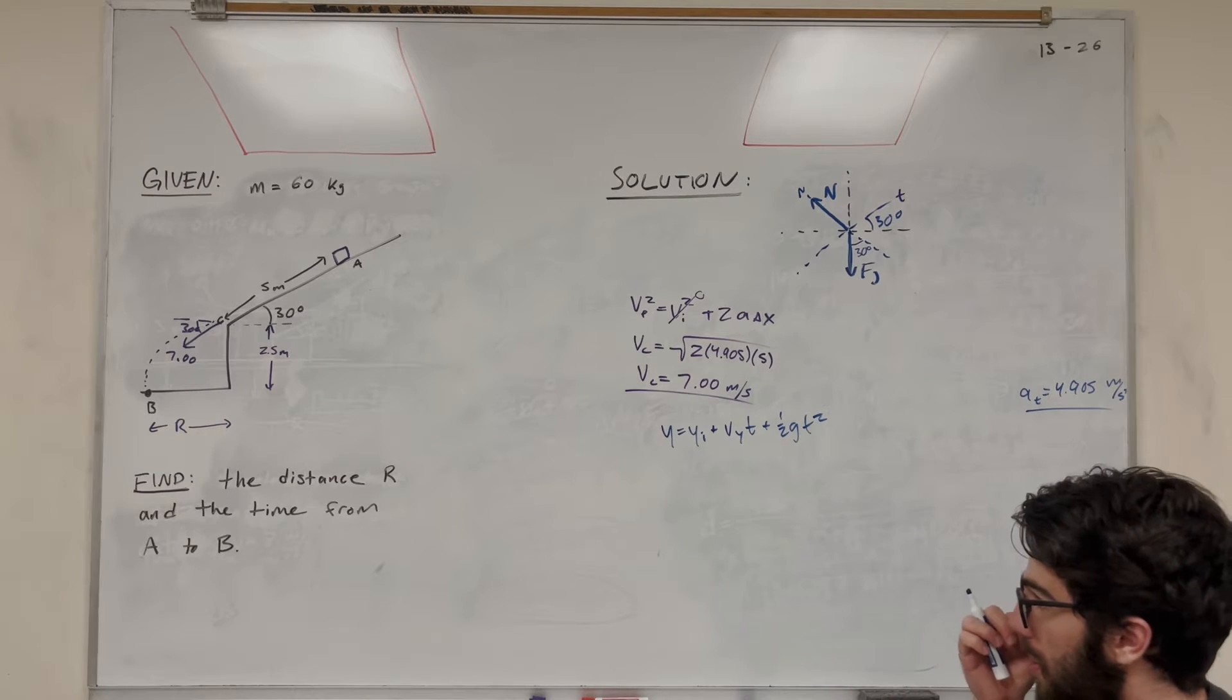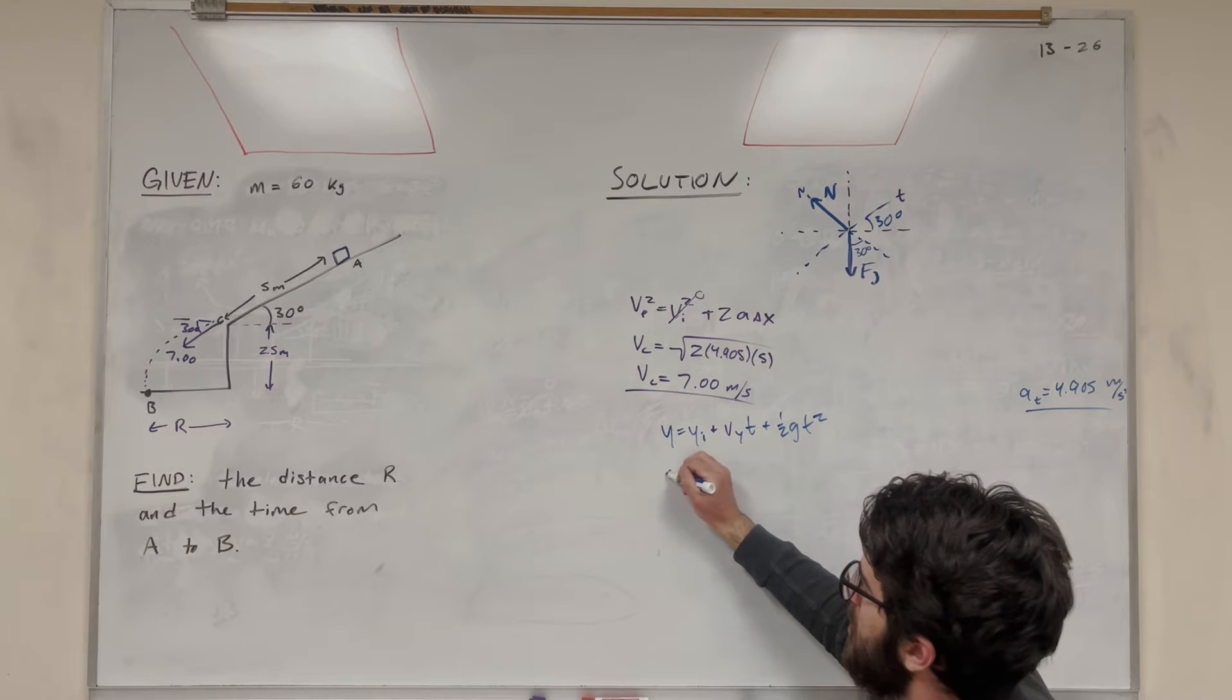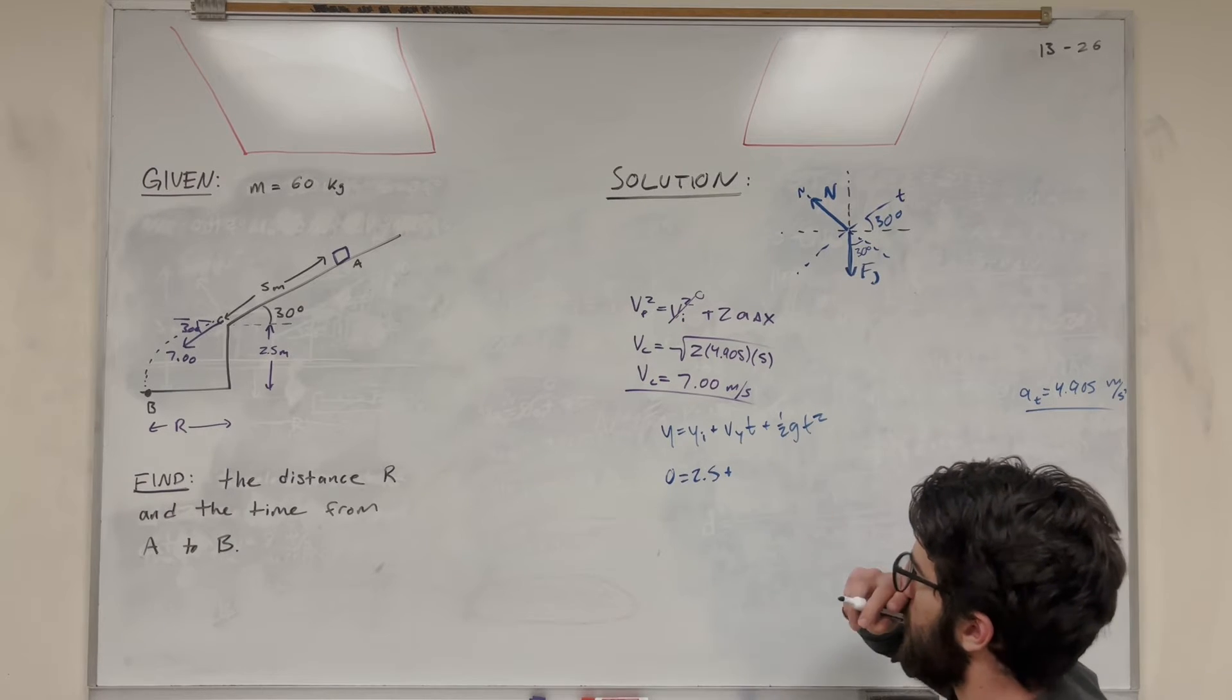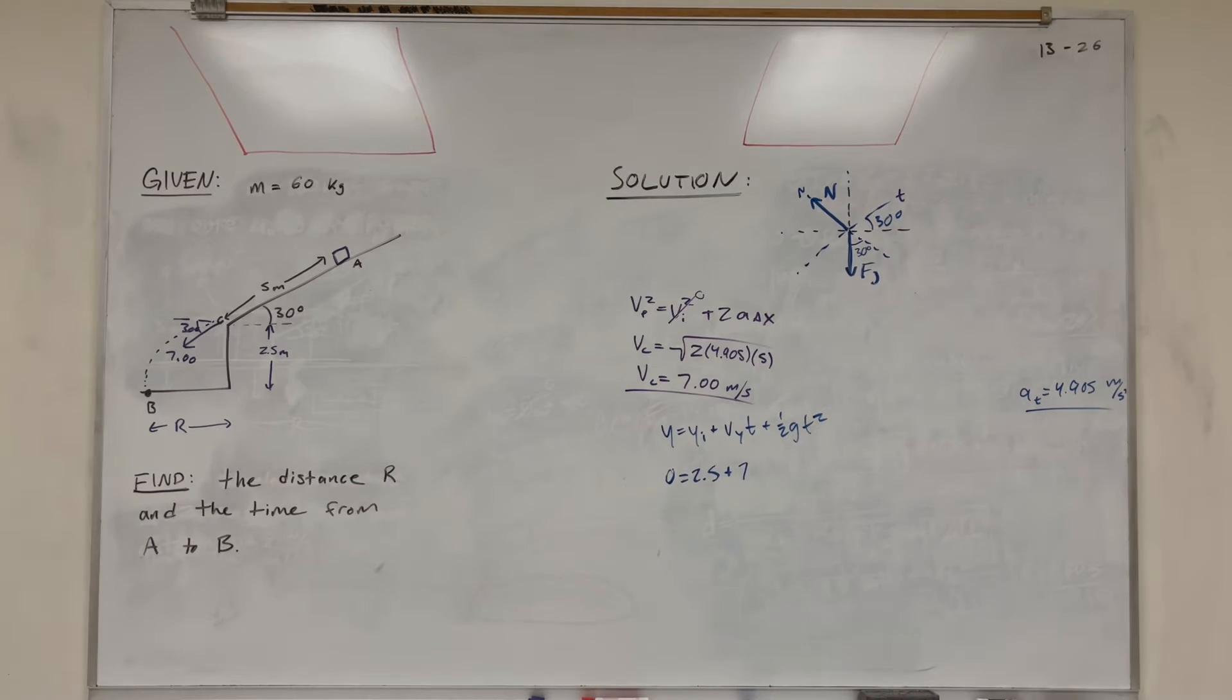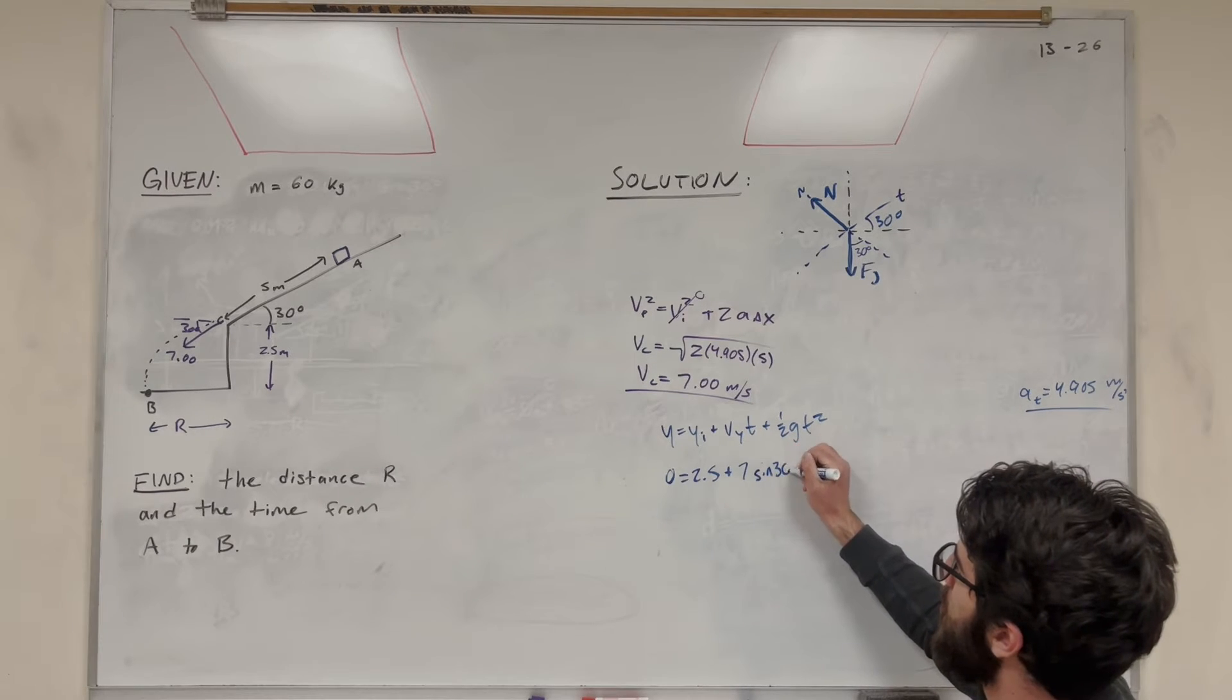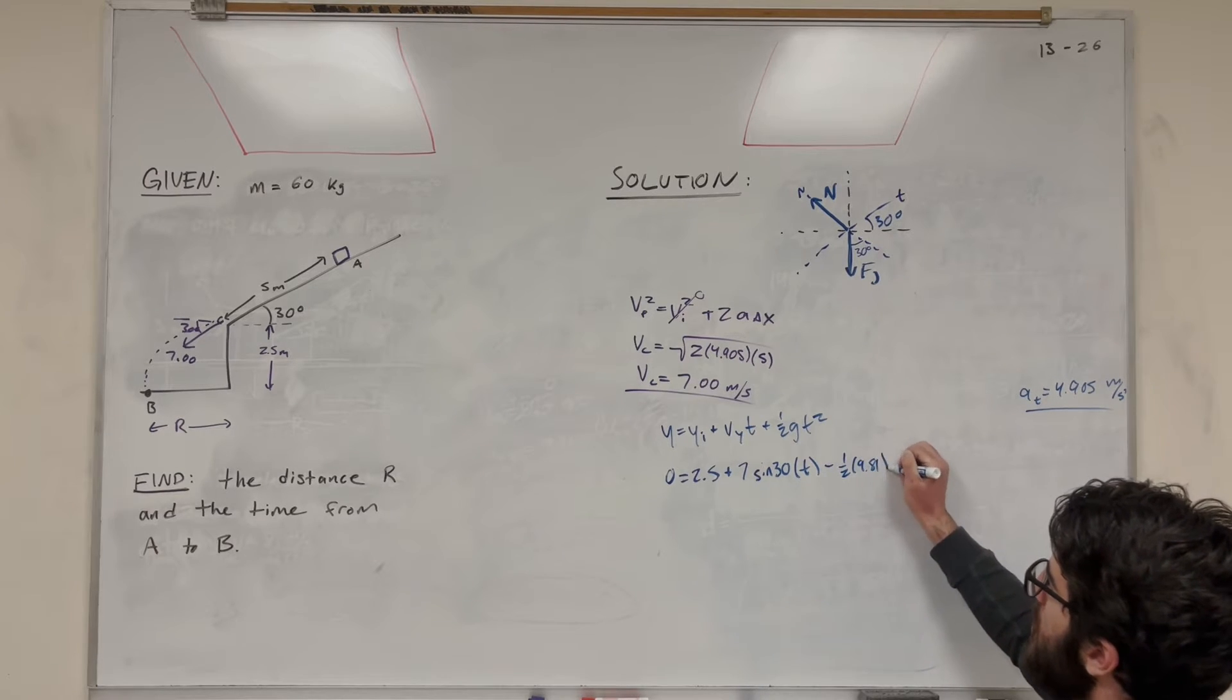So we're solving for time, so let's go ahead and solve. So initial height, let's take that to be 2.5, and the final is going to be 0. So 0 equals 2.5 plus velocity y, so that's going to be 7. But then we just want the y direction, so it's going to be sine of 30. Oh my bad. Just 7 sine of 30. And then time, we are solving for that. And then gravity, 1 half, 9.81, times time squared.